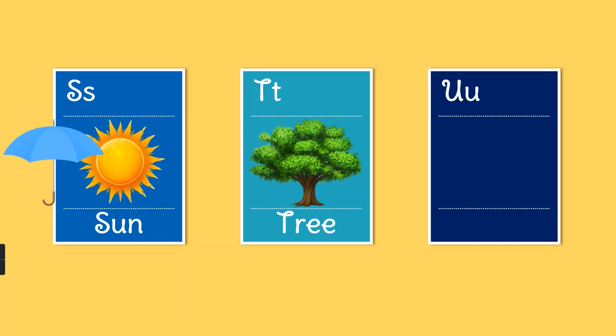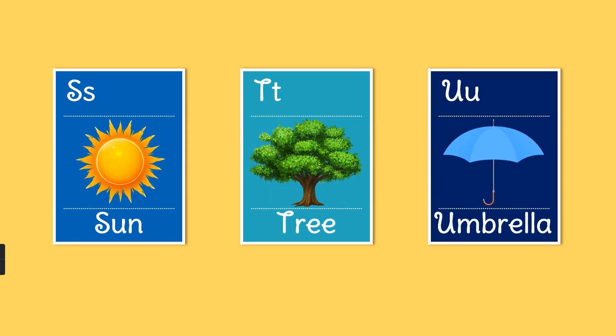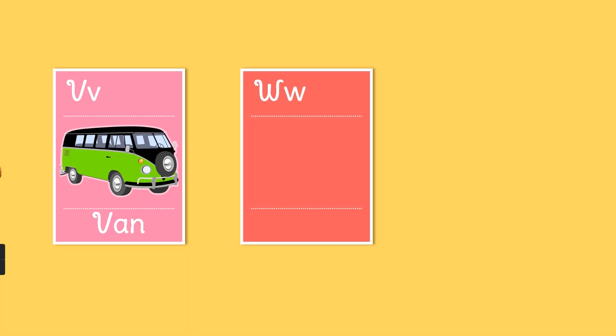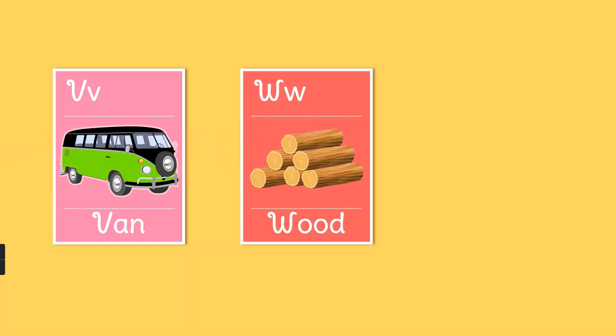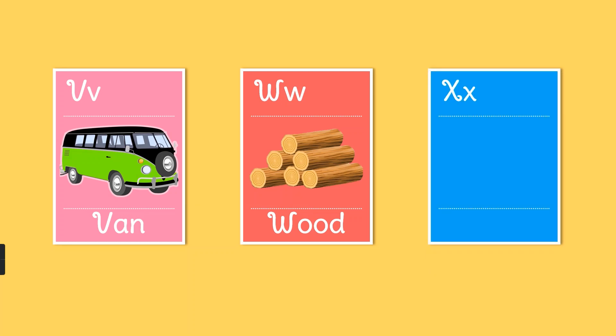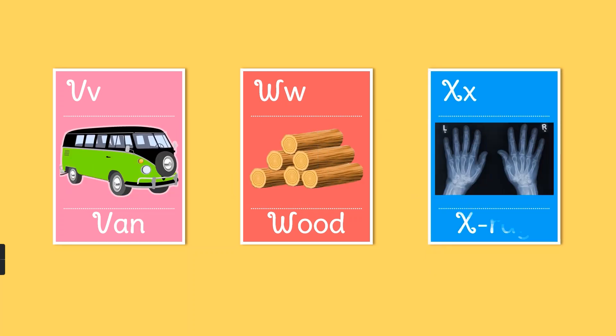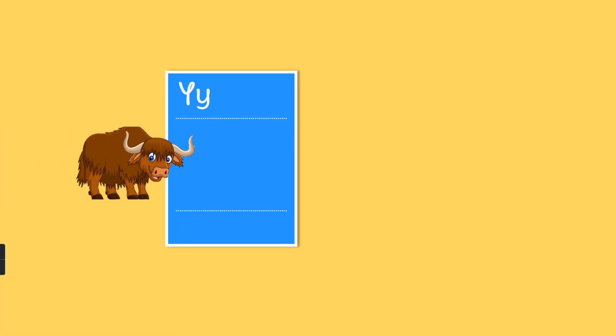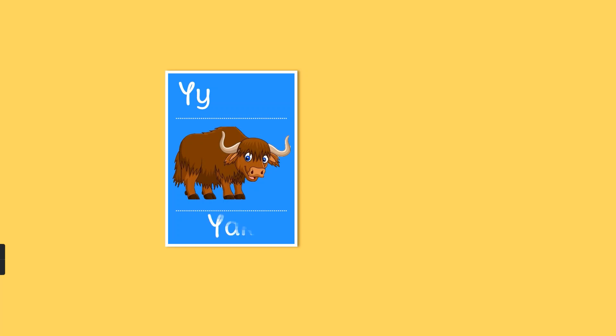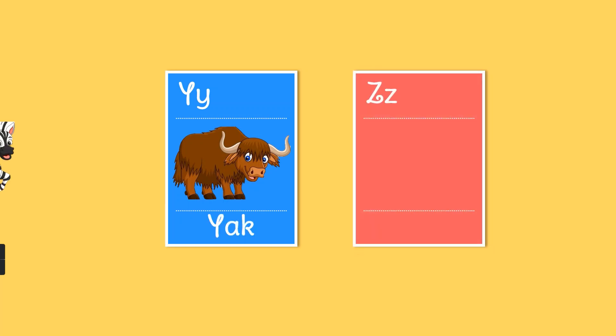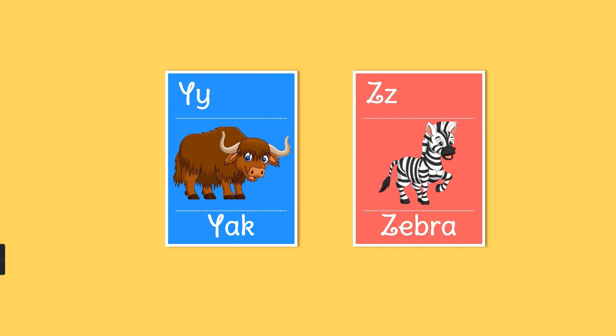U. U for umbrella. V. V for van. W. W for wood. X. X for x-ray. Y. Y for yak. Z. Z for zebra.